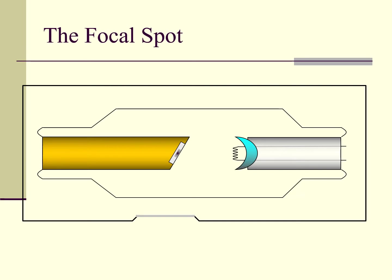Before we start, I would like to review the basic x-ray tube anatomy. For this illustration, I will use a stationary anode x-ray tube. It is easier to draw and the concepts are easier to visualize. Everything in this presentation, excepting anode materials, applies equally to rotating anode x-ray tubes.